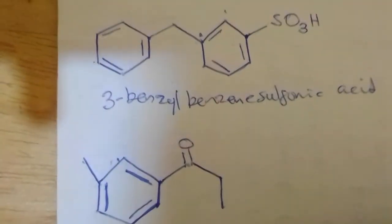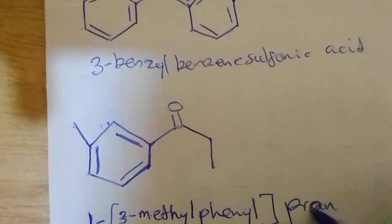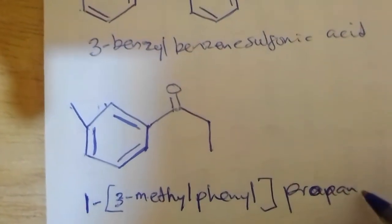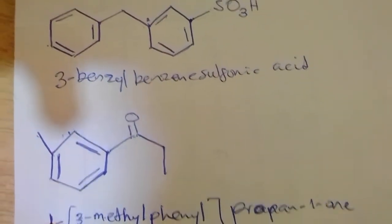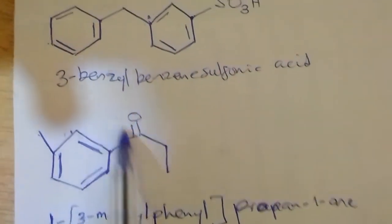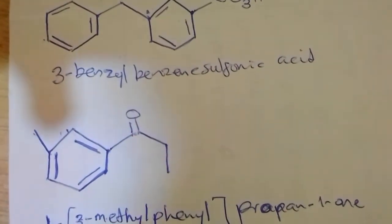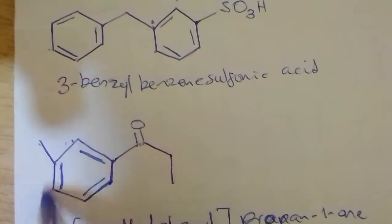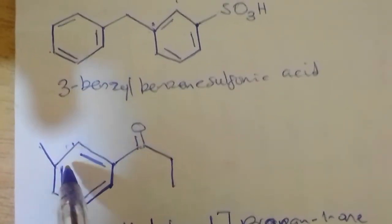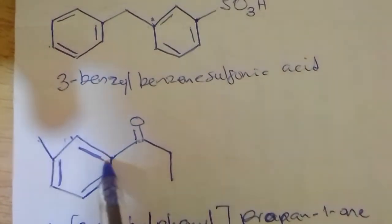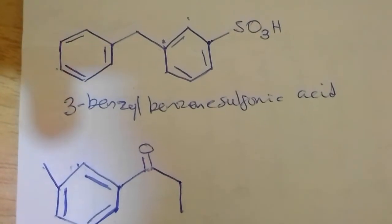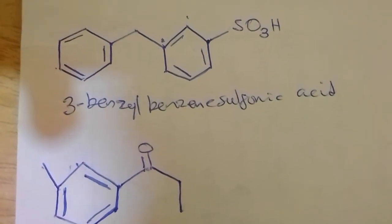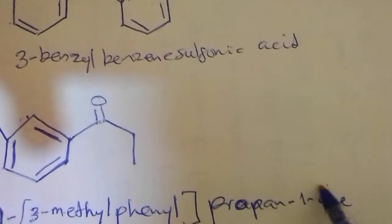Then the parent chain is propan-1-one. This 1 shows that the functional group is on the first position of the propanone. So the full name becomes 1-(3-methylphenyl)propan-1-one. The phenyl is just a benzene ring, and the 1 here shows that the functional group is on the first position of the propanone.